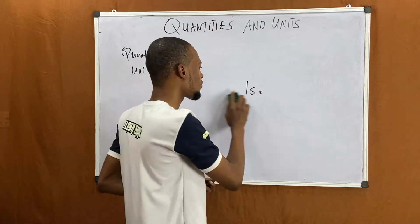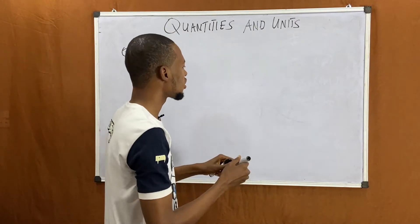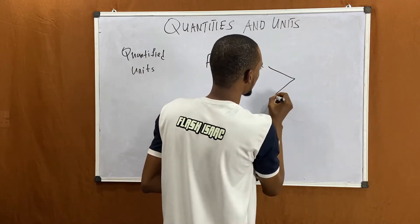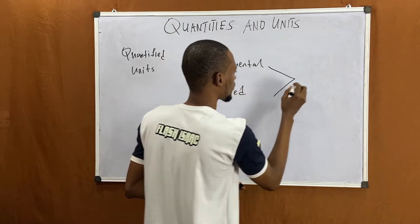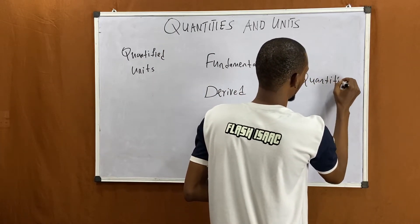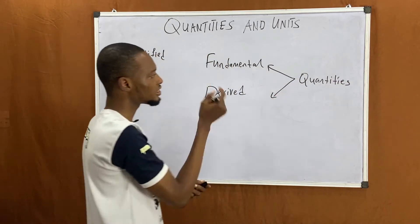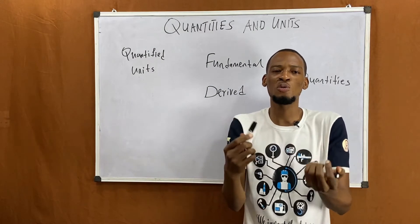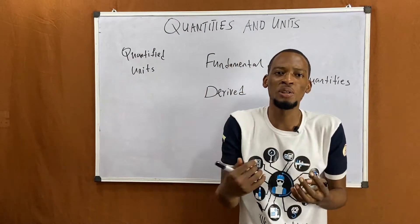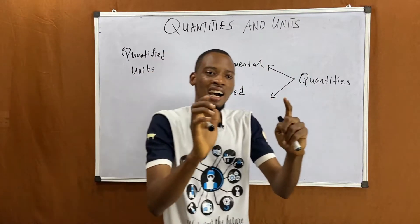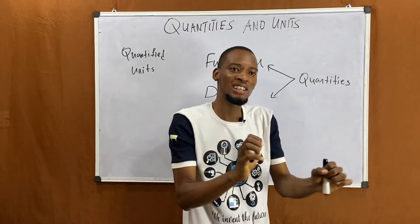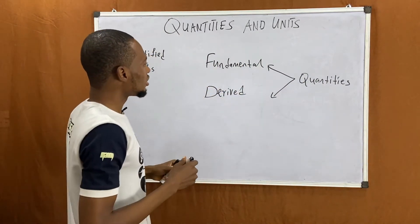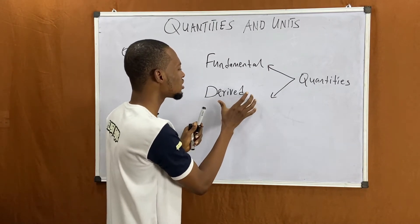In physics we have two types of quantities: we have the fundamental quantities and derived quantities. Fundamental quantities, or basic quantities, are quantities that are independent of other quantities. They are quantities that other quantities depend on — quantities from which other quantities are gotten. Derived quantities are quantities that are gotten from fundamental quantities.